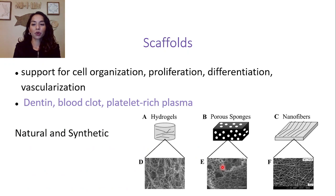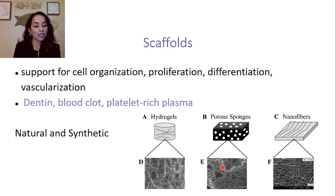Next I want to talk about scaffolds. Scaffolds provide support for cell organization, proliferation, differentiation, and vascularization. There are multiple ways scaffolds can be used: dentin can be used, as well as blood clot, platelet-rich plasma, and natural and synthetic scaffolds.